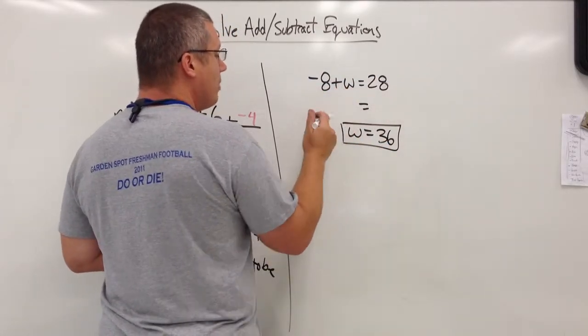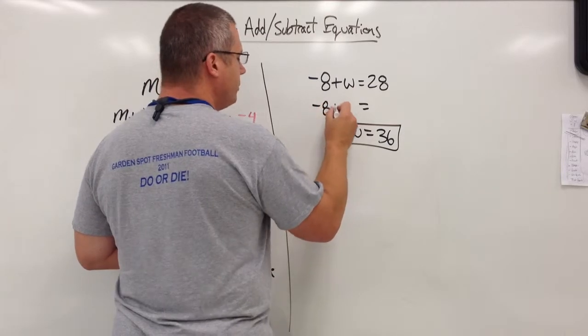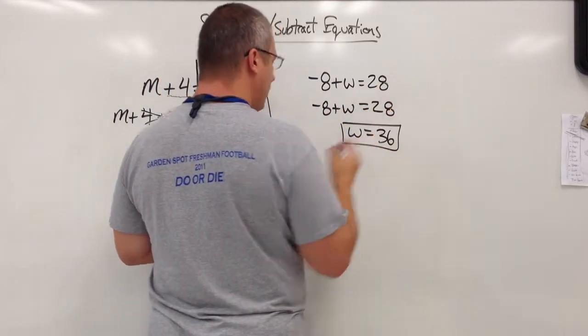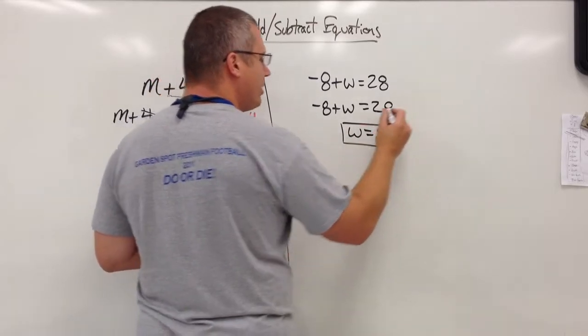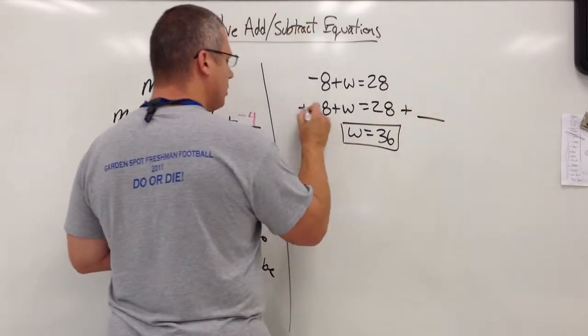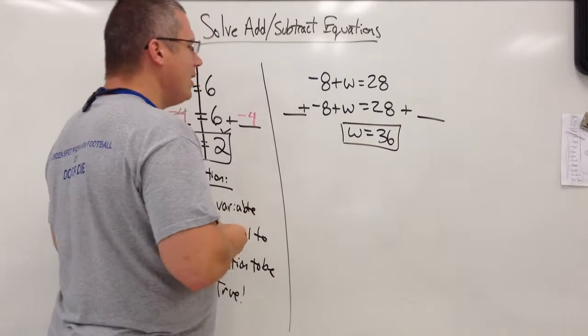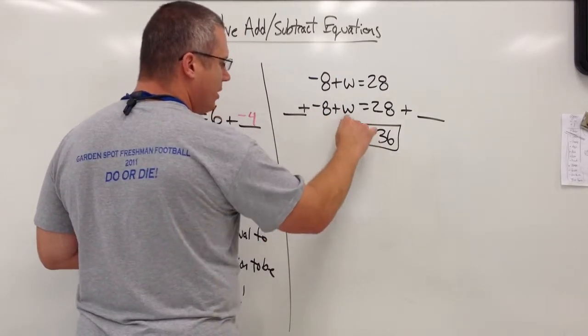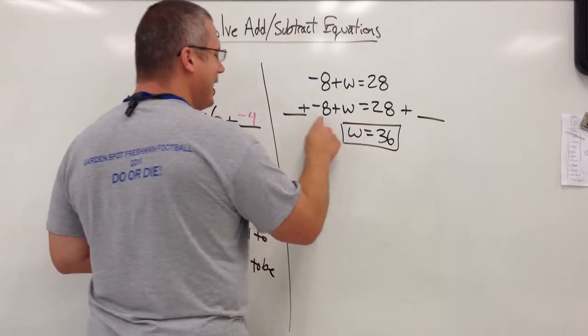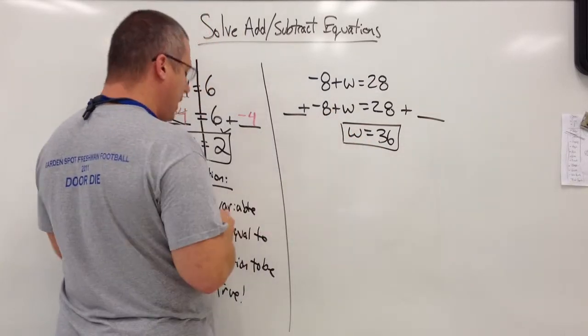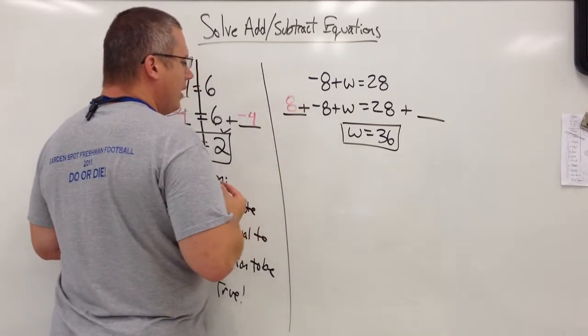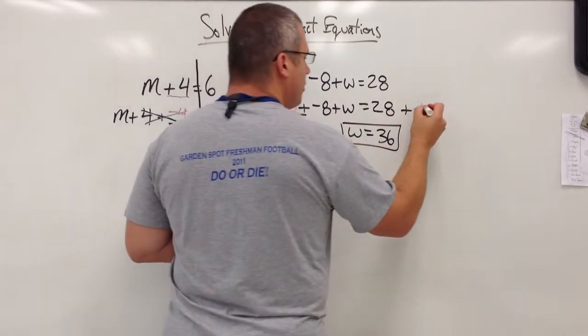So I'm going to take my equation. I'm going to recopy it. Negative 8 plus W, 28. I'm going to add the same thing to both sides. What do I want to add to make everything else on this side go away except for the W? Because I need him there. Well, I need the opposite of the number that's already being added. The opposite of negative 8 is positive 8. If I do it to one side, I must do it to the other.